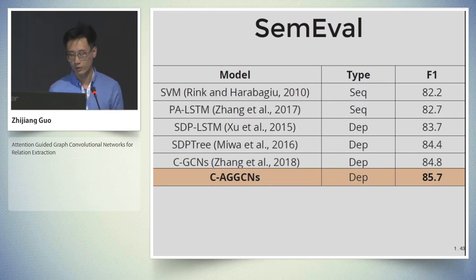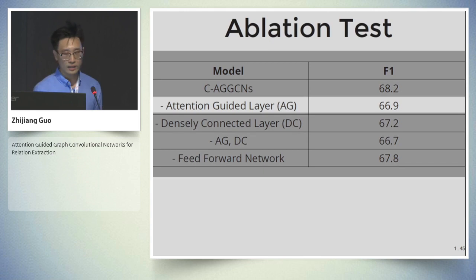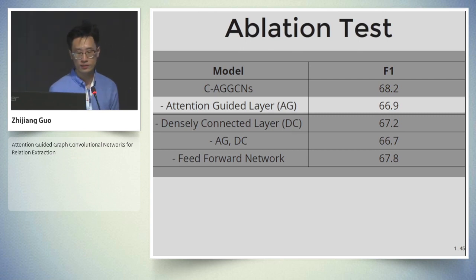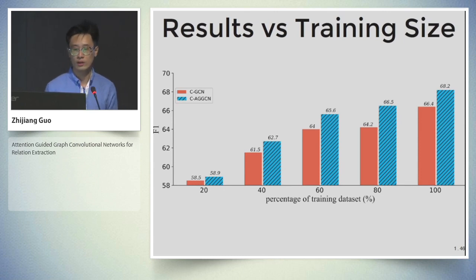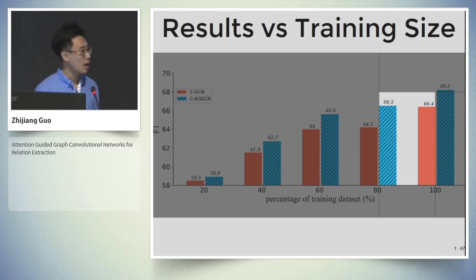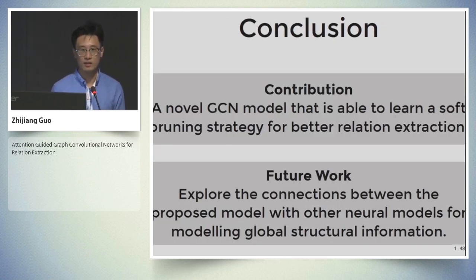The soft pruning strategy is also beneficial to sentence-level input. On the relatively smaller SemEval 2010 Task A dataset, our proposed model achieves the highest F1 score, showing its robustness. We further examined the contributions of different components: the attention-guided layer, corresponding to the soft pruning strategy, plays a significant role in the model. We also report results on different training data sizes — our proposed model consistently outperforms the current state-of-the-art system under the same amount of training data, and our model trained on 80% of the training data is able to outperform the GCN model trained on the complete dataset.